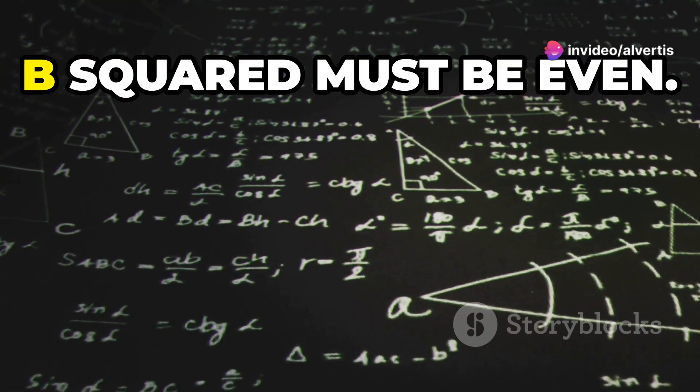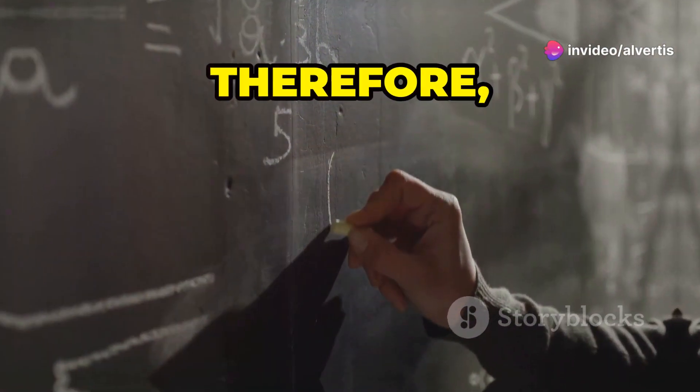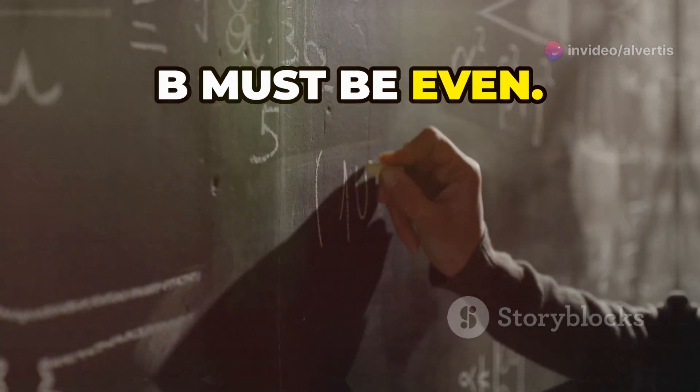Deduce b squared is even. Similar to step 3, b squared must be even. Therefore, b is even. Similar to step 4, b must be even.